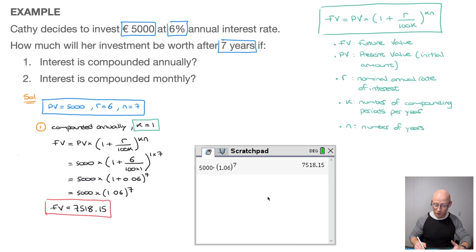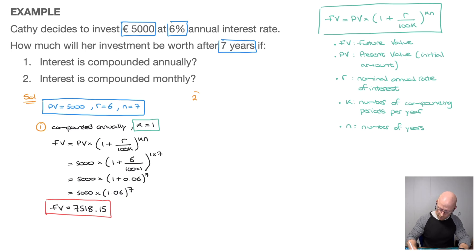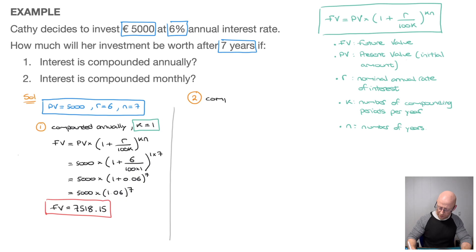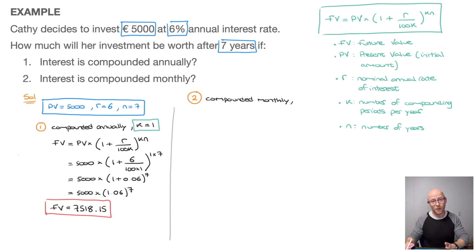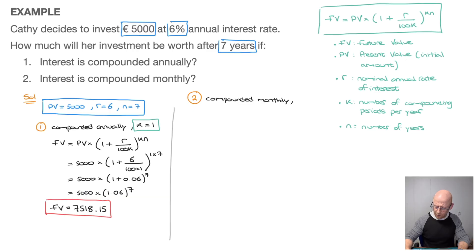Now let's see how this compares when interest is compounded monthly — that's question two. When interest is compounded monthly, the number of compounding periods per year is 12, since there are 12 months in a year. We'll be earning some interest every single month. So K equals 12.